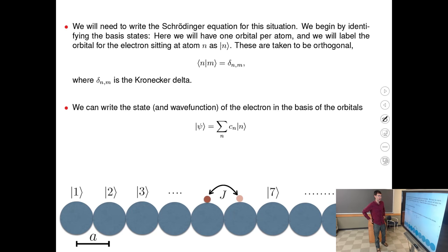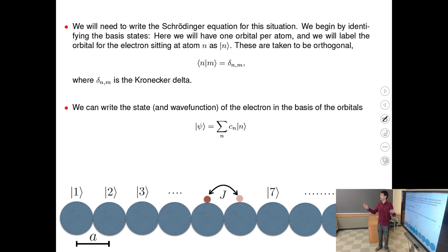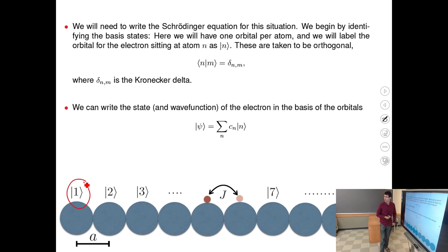In this lecture we simplify by considering the simplest atoms: only a single orbital per atom — say the s orbital of a sodium atom — and we label these orbitals 1, 2, 3, …, n with kets. These are the labels of the orbitals.